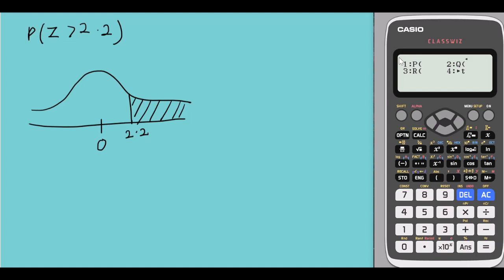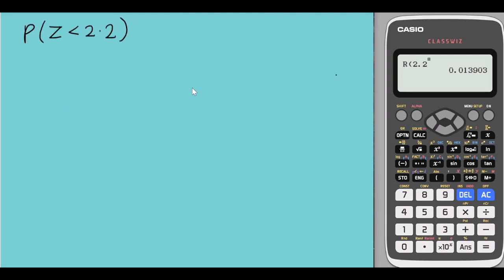Over here we have the P, Q, N, R function. When you want to find the probabilities on your right hand side, we would use the R function. So R of 2.2. I select 3, 2.2 gives me the probability 0.013903.